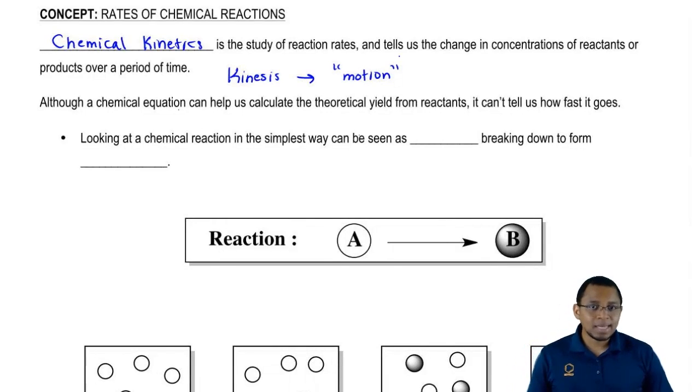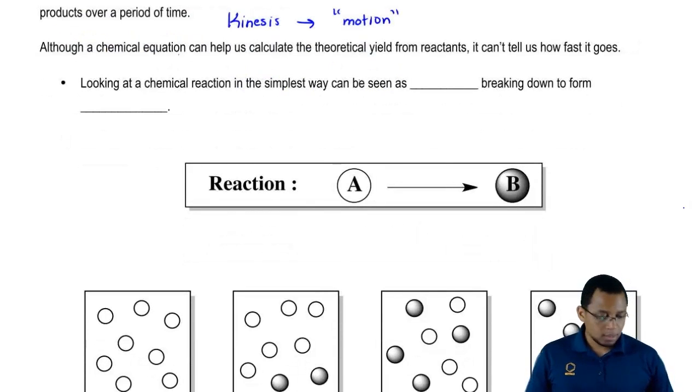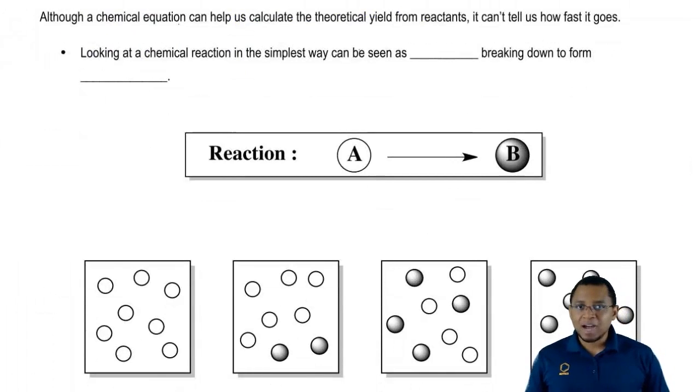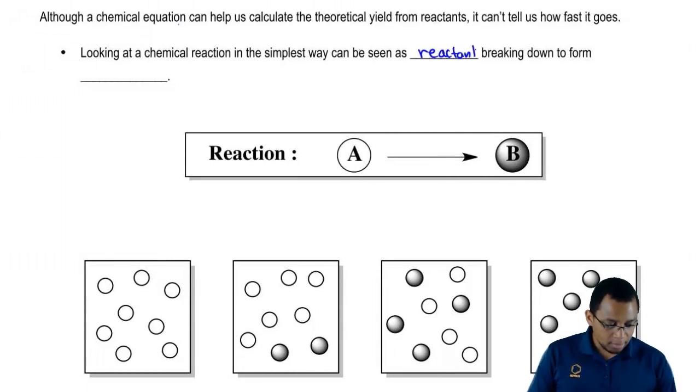Fundamentally, when looking at any balanced equation, here we have a simple one: A is changing into B. A could be any type of compound, B could be any type of compound. But fundamentally, this is a balanced chemical equation. When looking at any chemical equation, in the simplest way it's just our reactants breaking down to give us products.